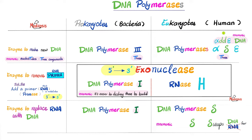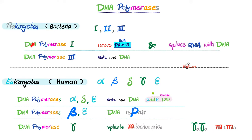After removing the RNA primer, we replace it with DNA. In prokaryotes, DNA polymerase 1 removes the RNA and then DNA polymerase 1 again — plus DNA polymerase 3 — replaces it with DNA. So in prokaryotes, DNA polymerase 1 has two functions: remove the RNA primer and replace it with DNA. DNA polymerase 3 synthesizes the new DNA.